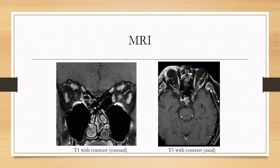For imaging findings, on MRI you can see on a T1 with contrast that the optic nerve contrast enhances on the coronal view, and you'll also see enhancement on the axial view.